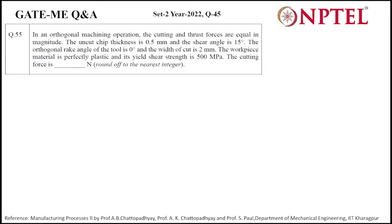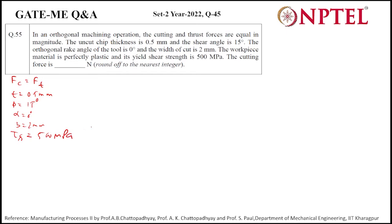This is question number 45 from the metal cutting GATE 2022 set 2, which is the 55th question in the paper. In this orthogonal machining operation, the cutting force is equal to the thrust force. The uncut thickness t is 0.5 mm, shear angle φ is 15 degrees, orthogonal rake angle α is 0, width of cut b is 2 mm, and shear yield stress τ is 500 MPa.